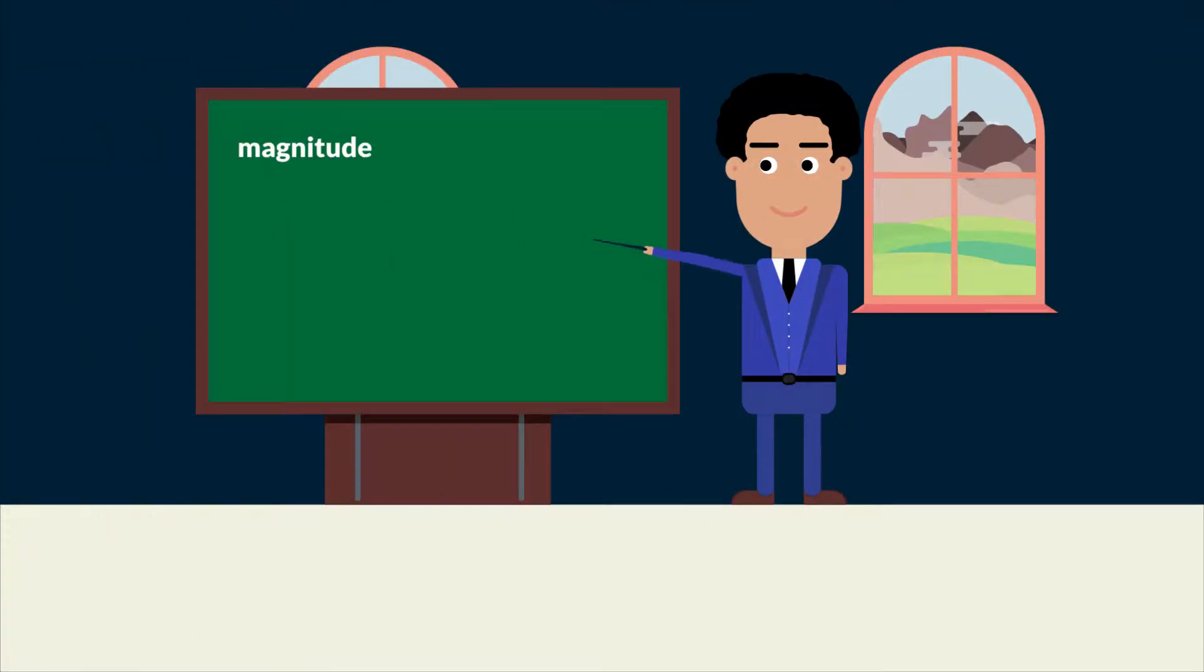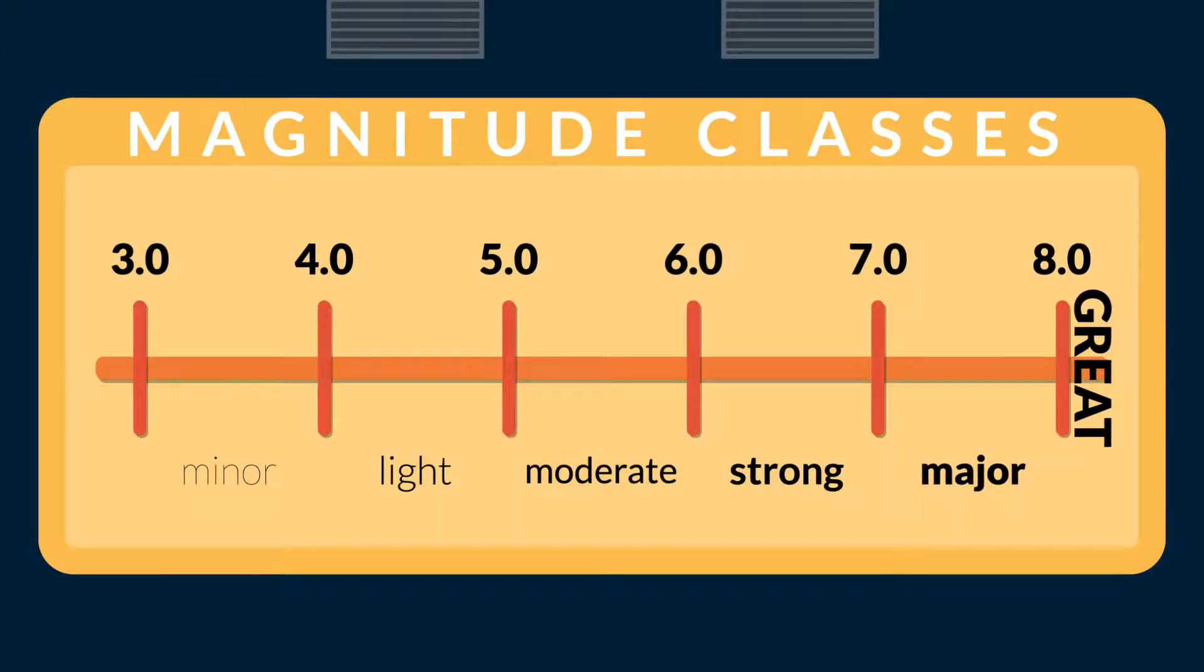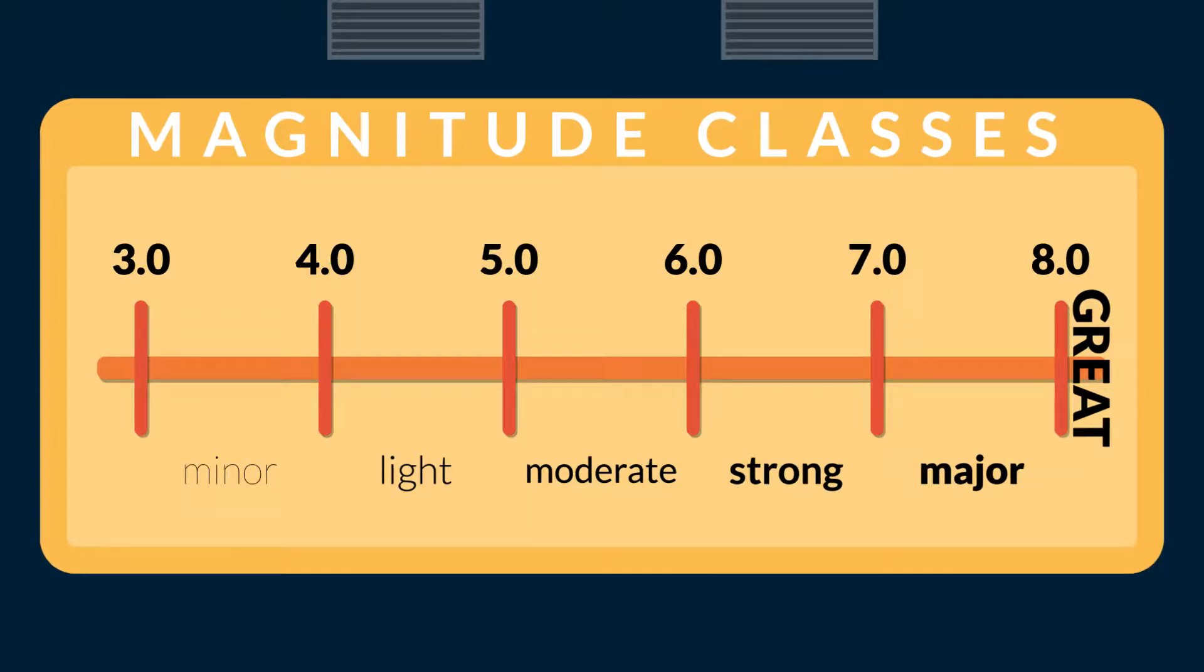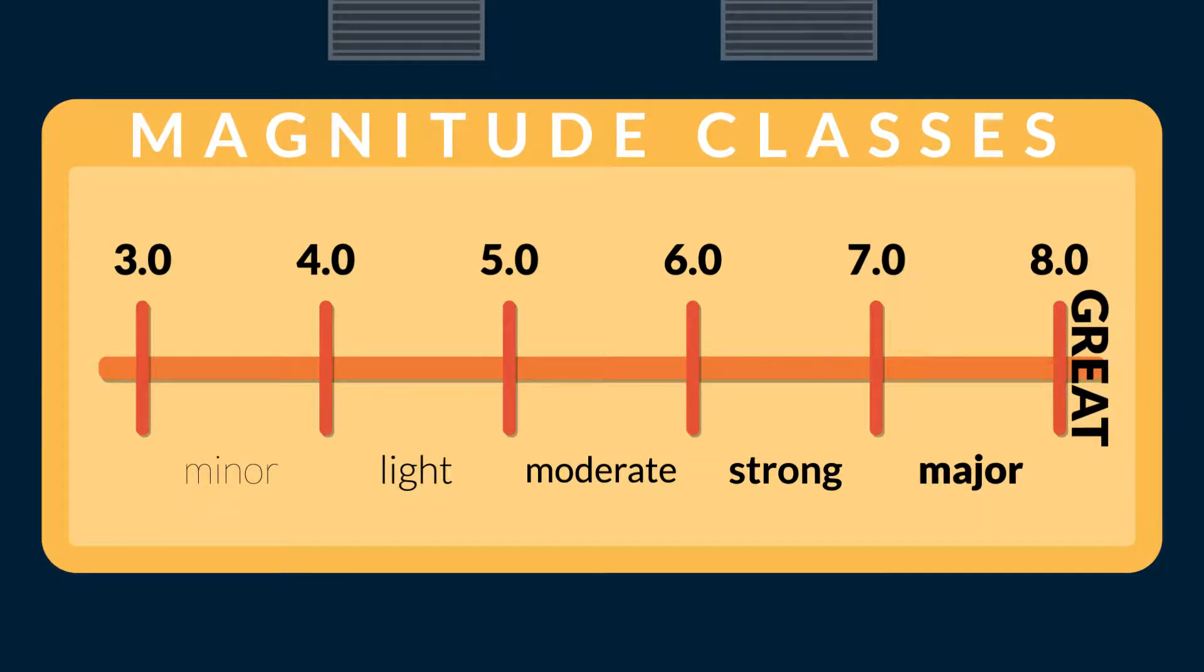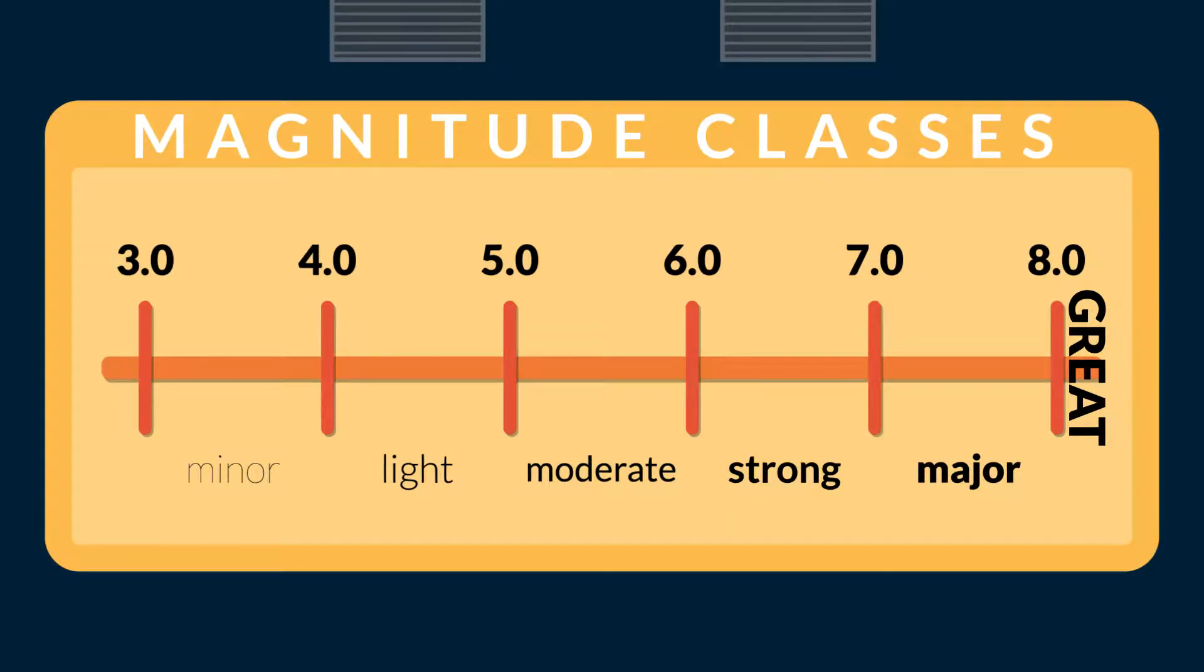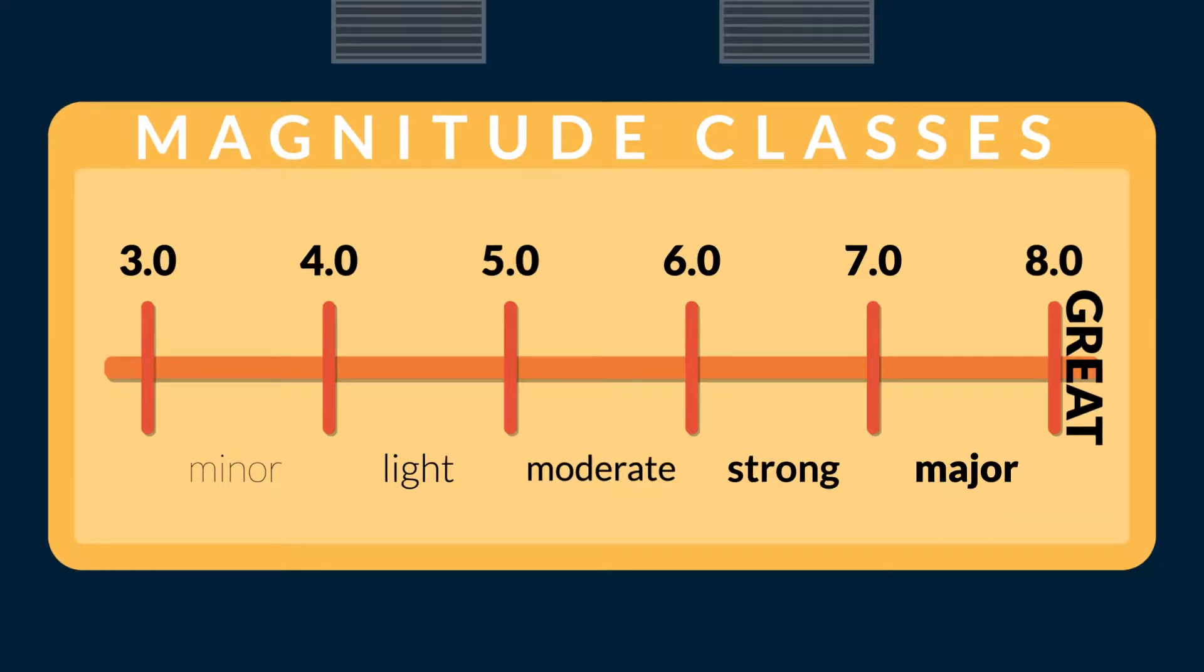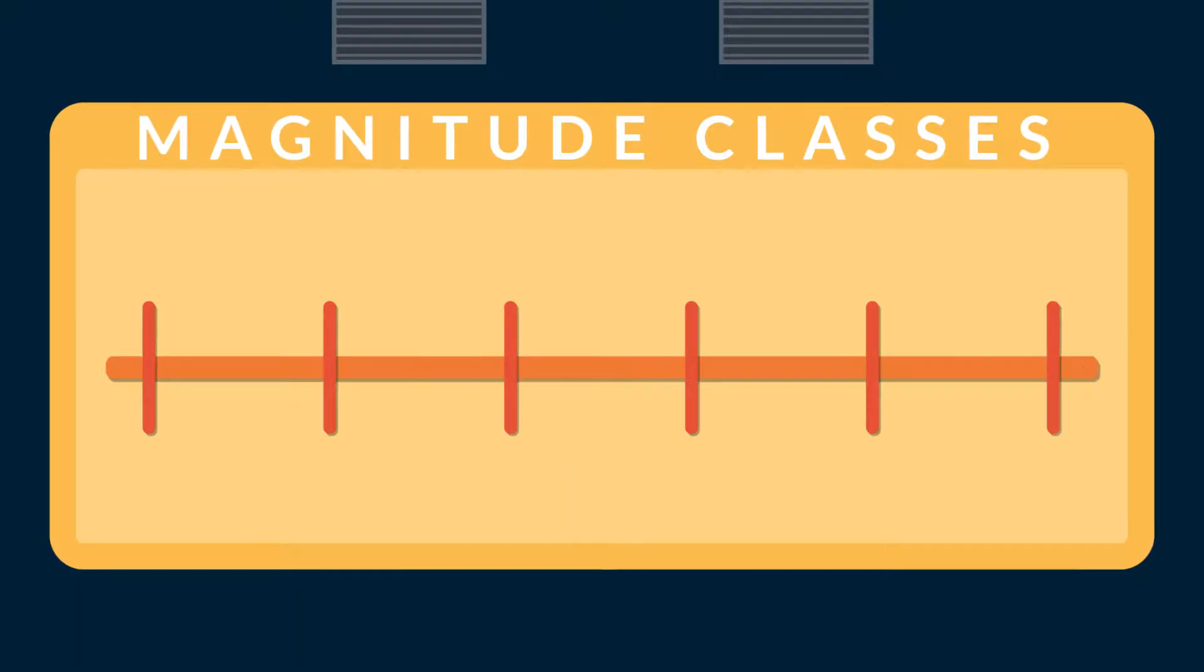Magnitude tells us how strong and big the earthquake is. Earthquakes are classified by their magnitude on the Richter's magnitude scale ranging from minor to great class. Minor class starts at magnitude 3 and ends at magnitude 3.9, meaning each class after starts with a round number and ends at 0.9 magnitude. Except the great class which starts at magnitude 8 and goes beyond up to 10 which has never happened before in recorded history.